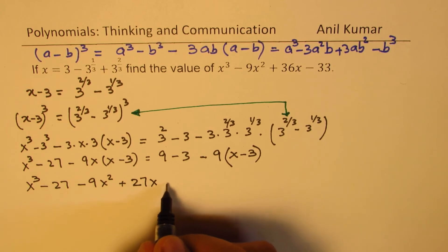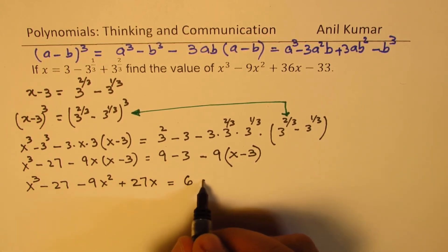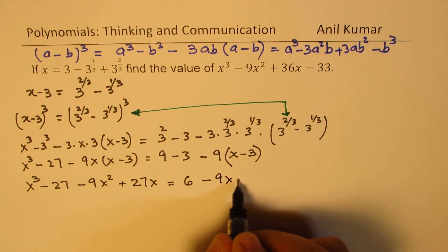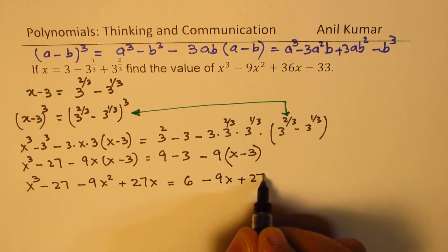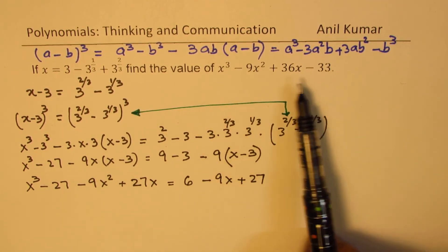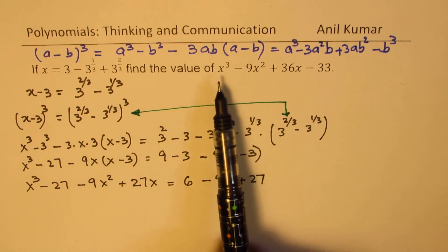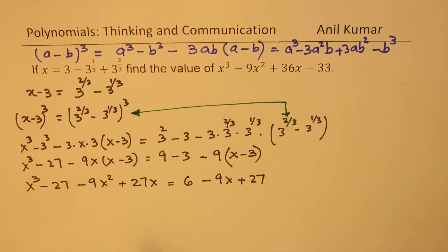On this side, we get 9 minus 3 is 6, and here we have minus 9x and plus 27. So that is what we get. We need to figure out what is all this. Let's bring all these terms to the left side. We already have 9x squared, so we have x cubed minus 9x squared.